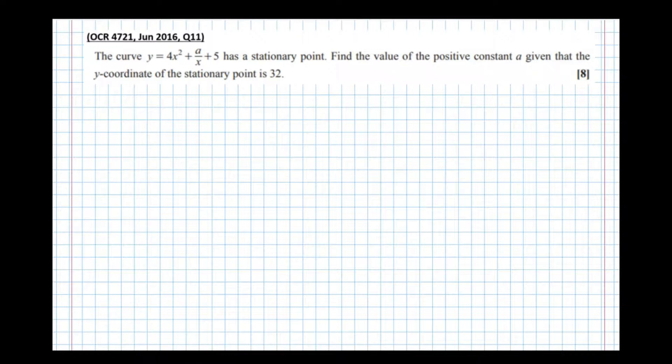So it says find the value of the positive constant a given that the y coordinate of the stationary point is 32. Okay, so let's first of all get some marks for differentiating.